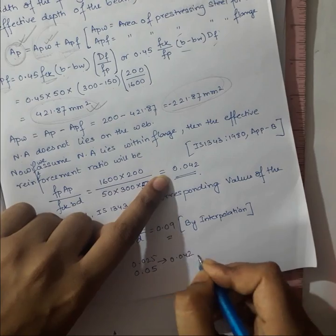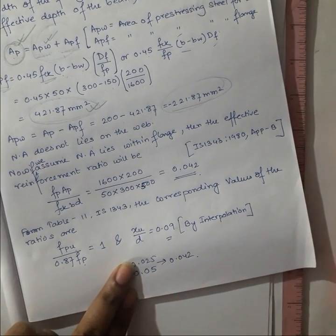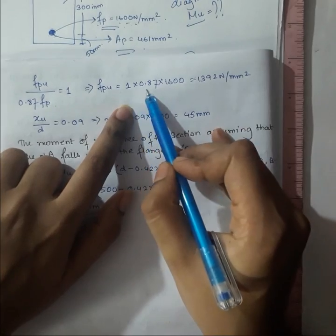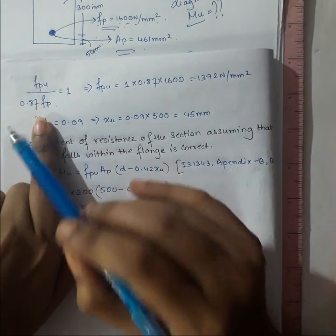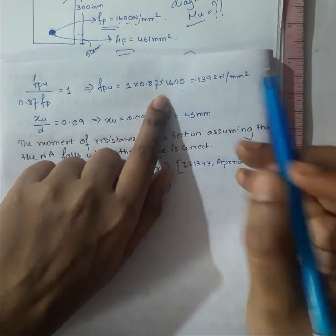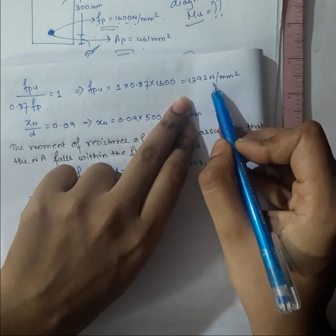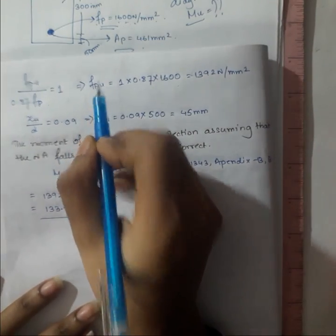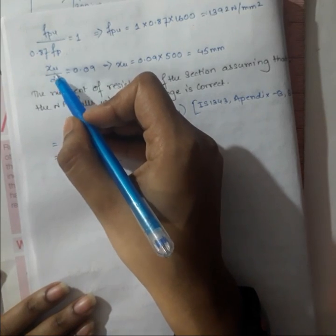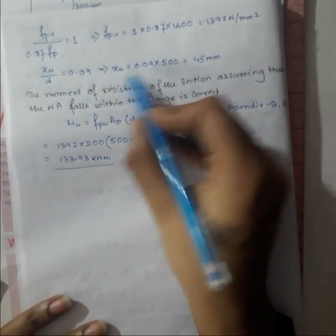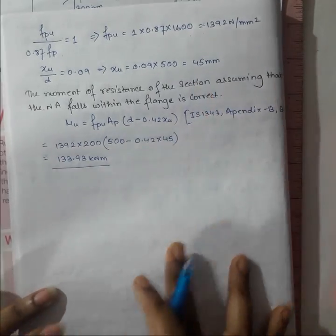By interpolating, we get fpu / (0.87 fp) = 1.0 and xu / d = 0.09. Therefore fpu = 1.0 × 0.87 × 1600 = 1392 N/mm², which is the ultimate tensile stress in the tendon. The neutral axis depth xu = 0.09 × 500 = 45 mm.